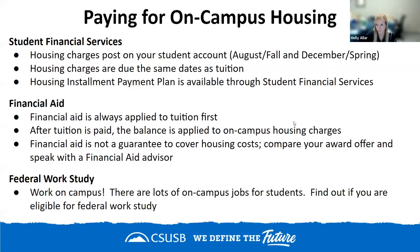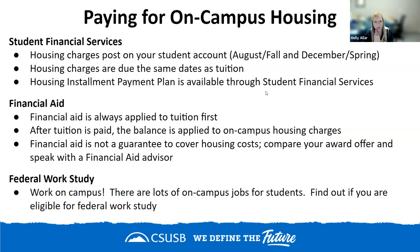Regarding paying for on-campus housing: we work with student financial services — your housing charges post to your student account. Your fall rent is placed in August and your spring rent in December. The due date is the same as the tuition due date. You can work with student financial services if you'd like to do an installment payment plan — there is no separate special payment plan for housing. Regarding financial aid: when you get financial aid, it gets applied to your tuition first. After tuition is paid, your balance would be applied to other charges such as on-campus housing. There's no guarantee that your aid will cover housing costs.